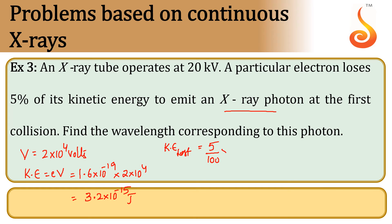5% means 5 by 100 of the total energy, which is 3.2 × 10^-15 joules, that each electron loses.